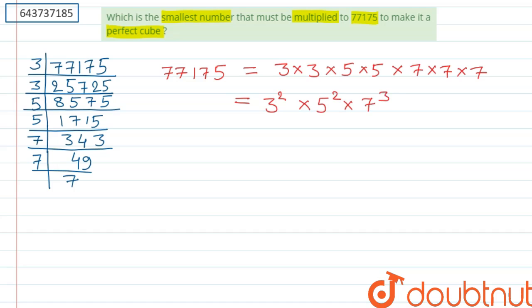From here we can rewrite the given number 77175 as 3×3×5×5×7×7×7. Now we need to make it a perfect cube. Here, the power of 7 is 3, that is a multiple of 3, so if we take cube root, it will be 7.